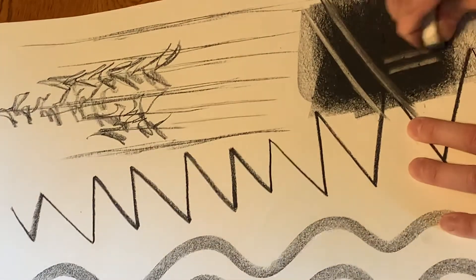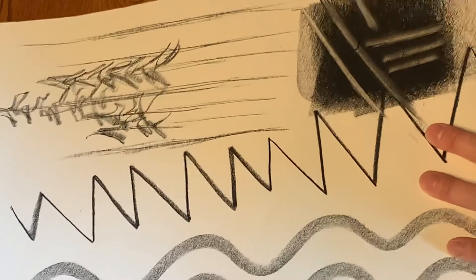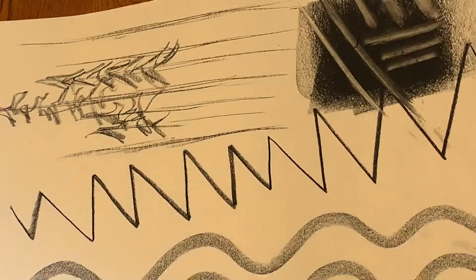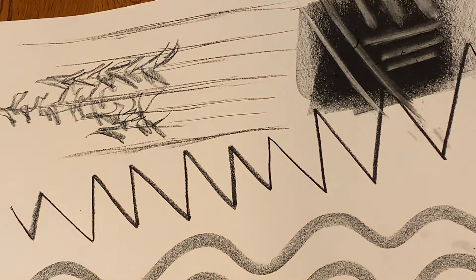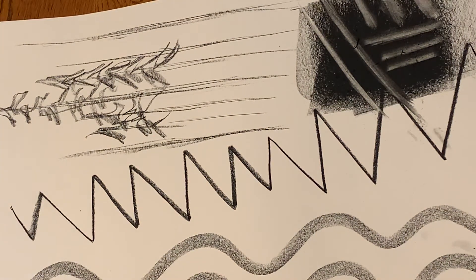Just experiment with the different surfaces of your eraser to get different kinds of lines created by removing material instead of adding. Those are just a few ways that you can make different qualities of lines with charcoal.